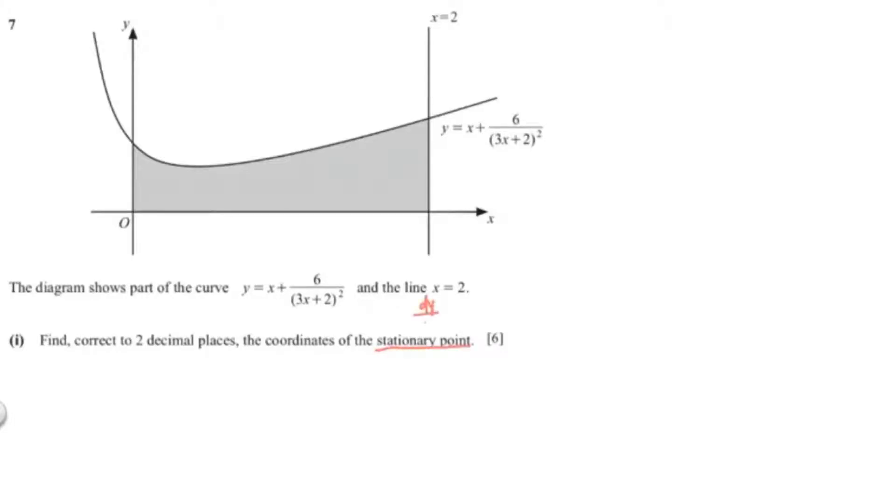As you can see, the question is asking for the stationary point, so your dy over dx should be 0. I'm going to rewrite the equation in indices form so it's easier for me to differentiate.